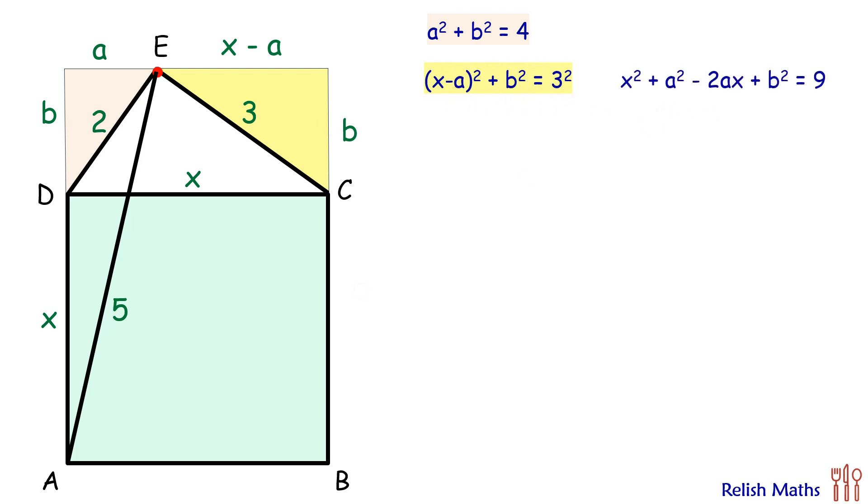Opening up the bracket, we'll get this relation. Now here we'll put the value of a² + b² = 4, so we'll put this value and simplify. We will get x² - 2ax = 5. Taking everything on right side and getting the value of a, we'll get a = (x² - 5)/(2x).